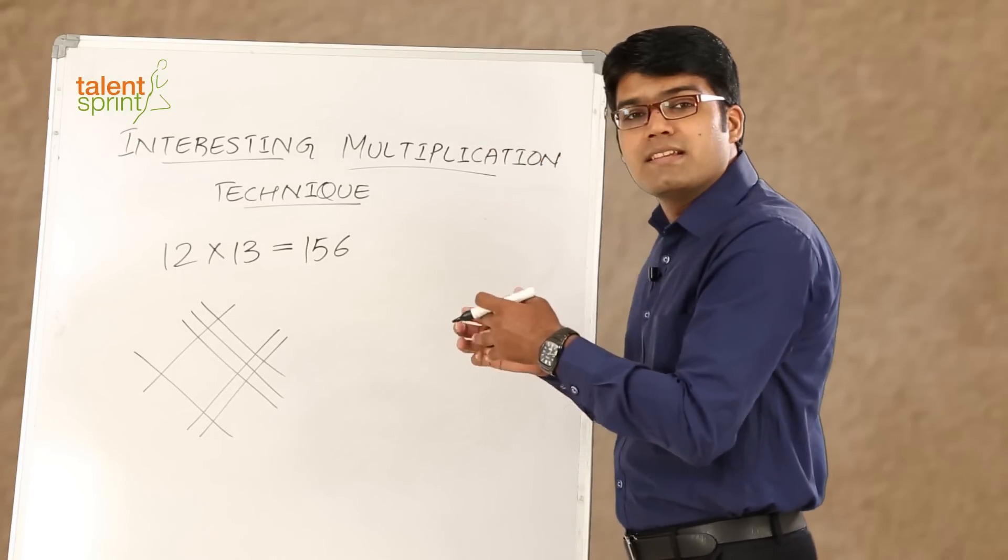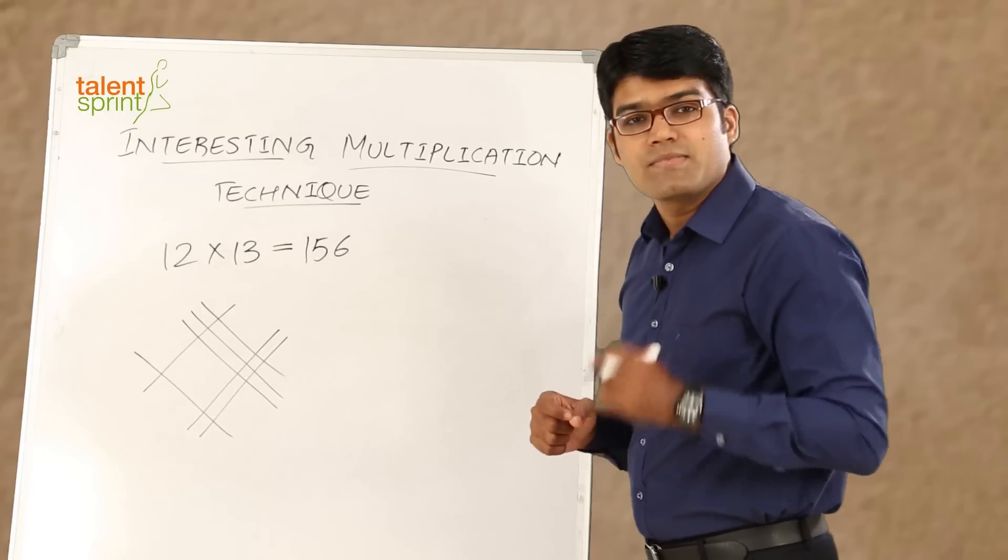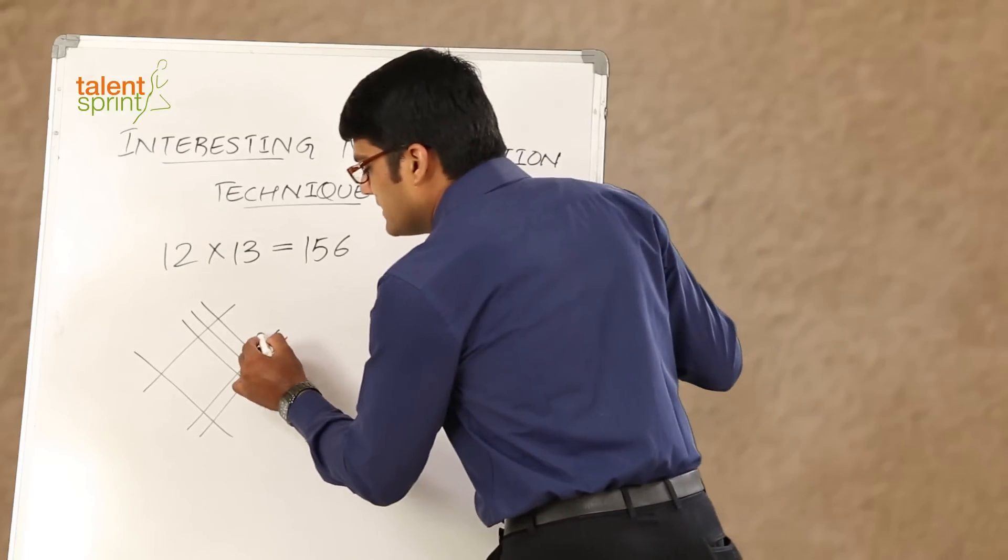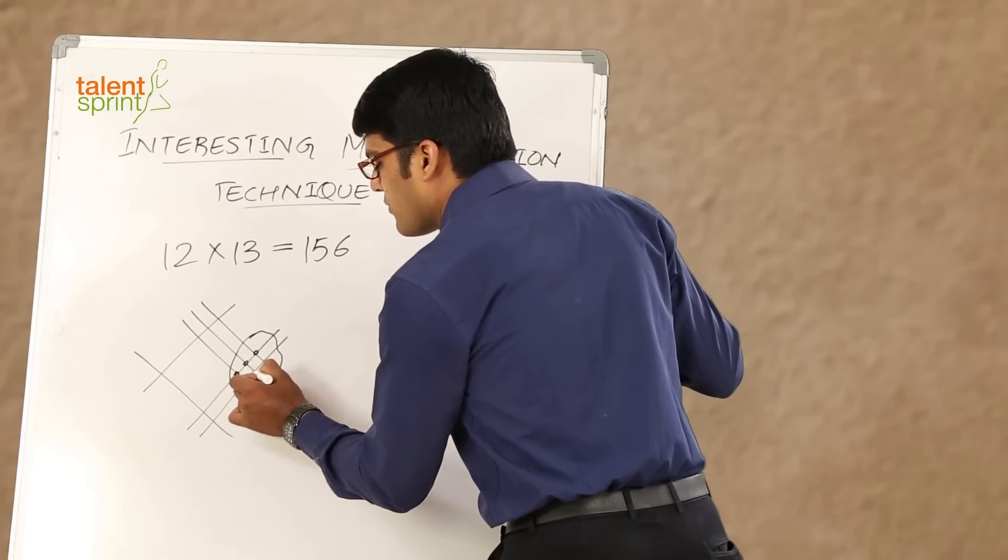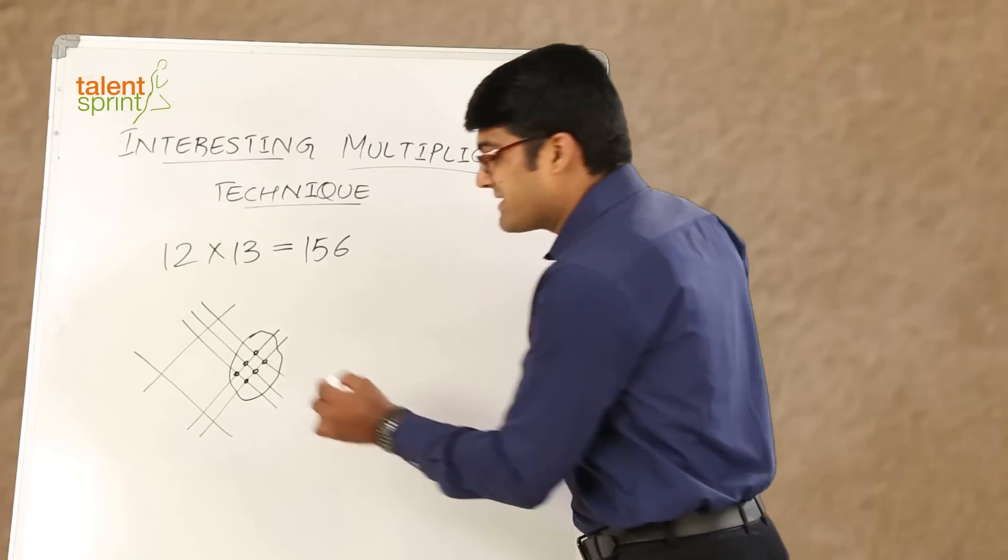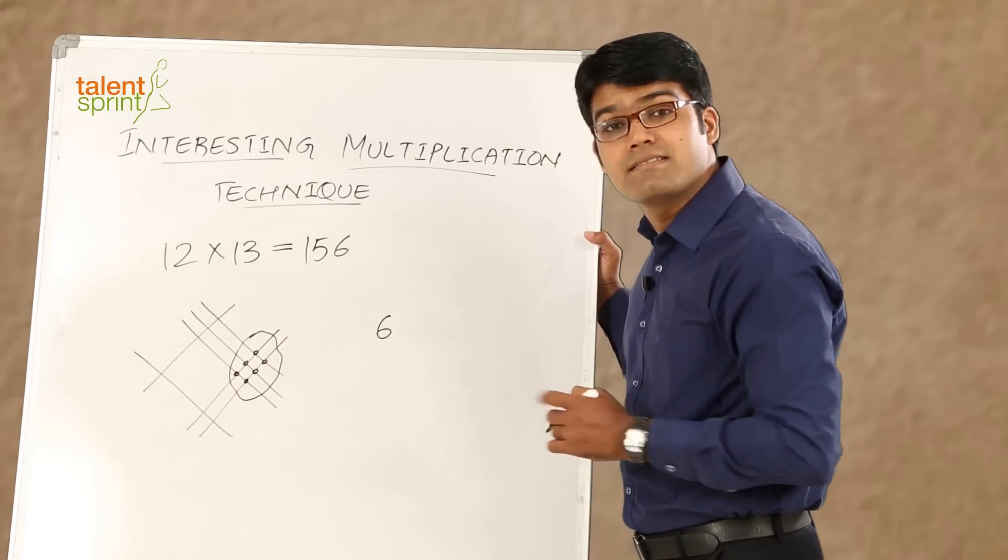Now with the help of the various points that we see, points of intersection that we see here, we can arrive at the answer. See, what do we need to do? Look at this part of intersection. We have got 1, 2, 3, 4, 5, 6. Now, 6 points of intersection implies the result will have 6 as its units place.